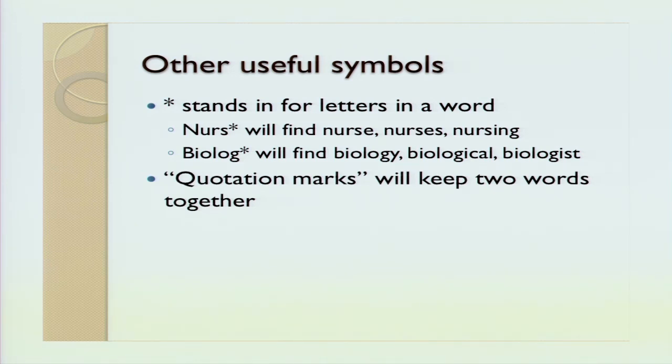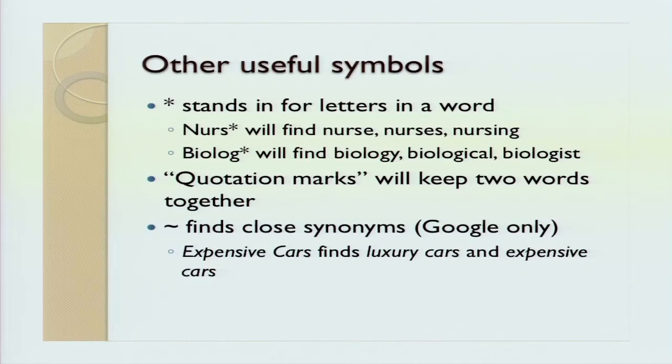Quotation marks will keep two words together on a page, so it's forced to search for that phrase rather than the individual words — most of you have probably done this in Google before. And the last one is a tilde, which is only for Google; most databases don't do this. Tildes will find close synonyms. So, for example, ~expensive cars will find luxury cars or expensive cars.